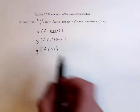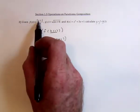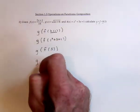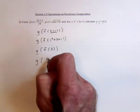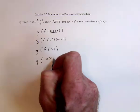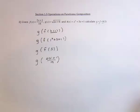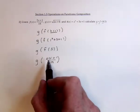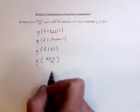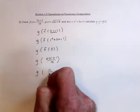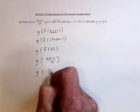So substitute a 5 in for x, and we've got 2 times 5 plus 1 divided by 15. Evaluating this, 10 plus 1 is 11 fifteenths.